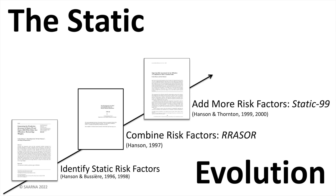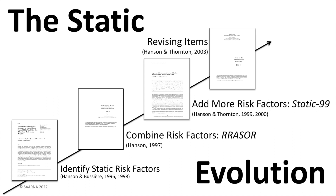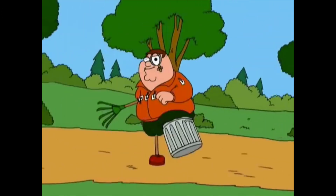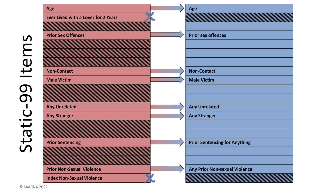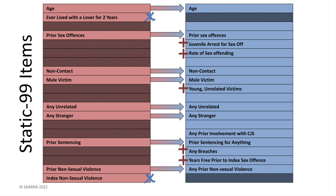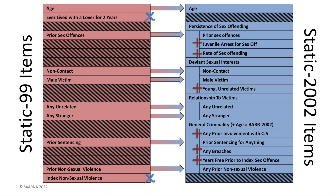Nevertheless, in 2002, Hansen and Thornton published an optimized version of the scale. They learned so much in developing Static that they were ready to rebuild it. They removed two items that caused scoring issues and added five new items to increase both predictive validity and conceptual clarity — helping evaluators understand which items were tapping into which potential causes for sexual offending.